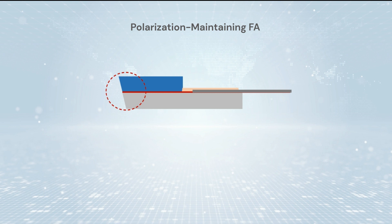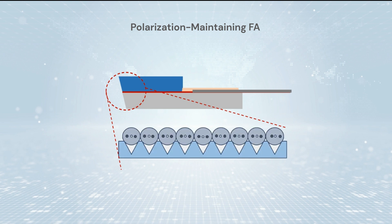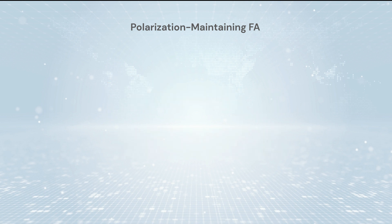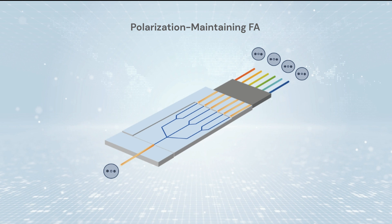Polarization maintaining fiber array is an array device composed of polarization maintaining fibers. Signals remain highly polarized during transmission. Polarization maintaining FA is widely used in coherent optical communication. The polarization maintaining fiber is used to keep the polarization state of the light wave unchanged during transmission.